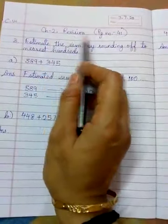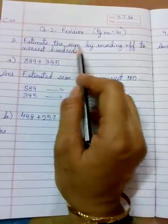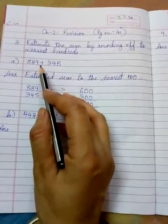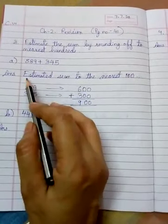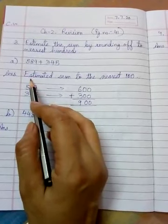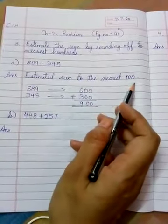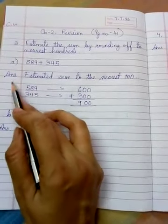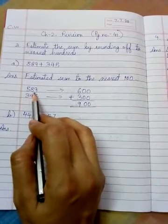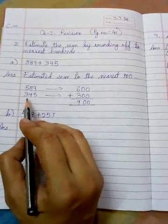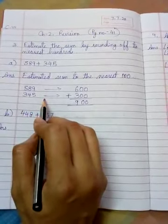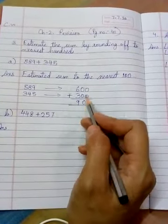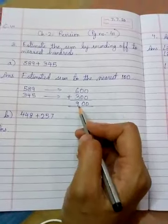This is how you will do in the copy. Putting today's date, classwork, chapter 2 revision, which is on page number 41. You will write the whole question: estimate the sum by rounding off to the nearest 100. I have done part A. Part B you will do yourself. How have I done? 589 has to be added to 345. Same way we have written, the way we have written in exercise 2.7. Estimated sum to the nearest 100. 589 lies between which 200? 500 and 600. Now tell me, 589 is near to 500 or 600? 600, because this 89 is more than 50. If it's 50 or more than 50, it will turn to 600. 345 lies between 300 and 400, but it is near to 300, so rounded off to 300.